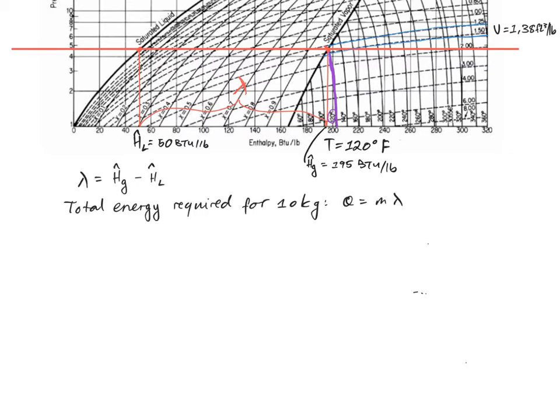So once we realize that the enthalpy that will be required to take a substance from saturated liquid to saturated vapor will be the difference between the enthalpy of that liquid and the enthalpy of that vapor, we have a name for that: the heat of evaporation. We realize that the total energy required to evaporate 10 kilograms will simply be the mass times the heat of evaporation. So we're a very simple sum away from the final answer along with some unit conversions.